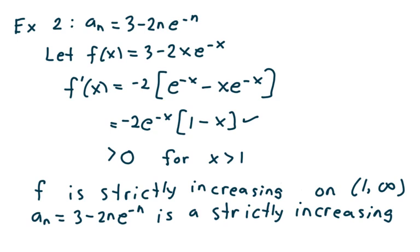Something to keep in mind: e to the negative x is always going to be positive. Negative 2 is always less than 0, so we have to look at the factor (1 minus x). For x greater than 1, if we plug in x equals 2, then 1 minus 2 is negative 1, and negative 1 times negative 2 equals positive 2. Taking positive 2 times something always positive means f prime of x is greater than 0 for x greater than 1.